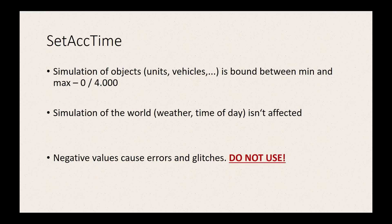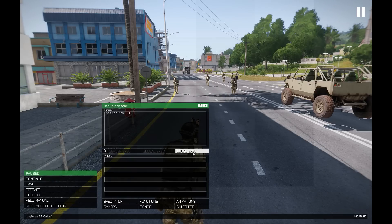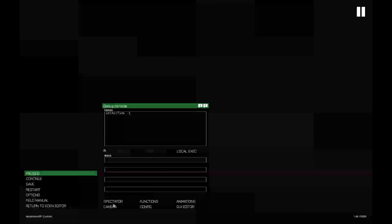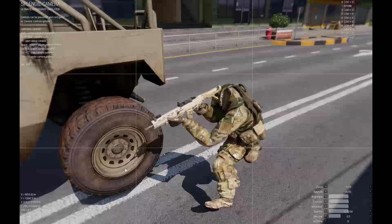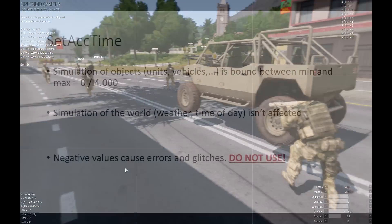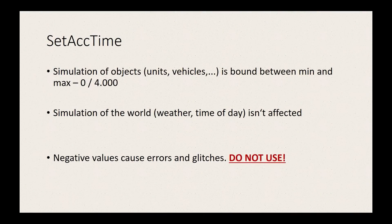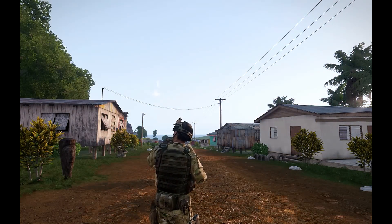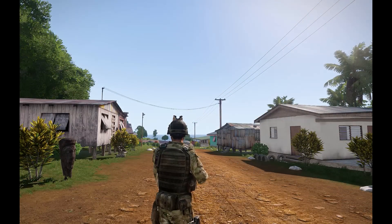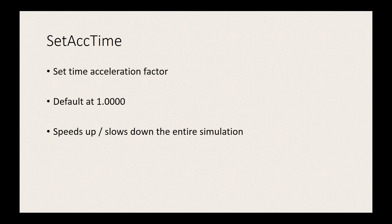Now don't get too excited — the command isn't that amazing. You can't insert a negative value and watch the mission rewind in real time; that's not how this works. The game will instead not know what to do and you'll be unable to continue. With speeding time up, if you try to go beyond the recommended max of 4 times normal speed, the player and all units or objects can't seem to speed up beyond that value, so movement will be stuck at 4x. However, the time itself and environmental changes do speed up beyond that, so you can speed through days and nights in just a few seconds.